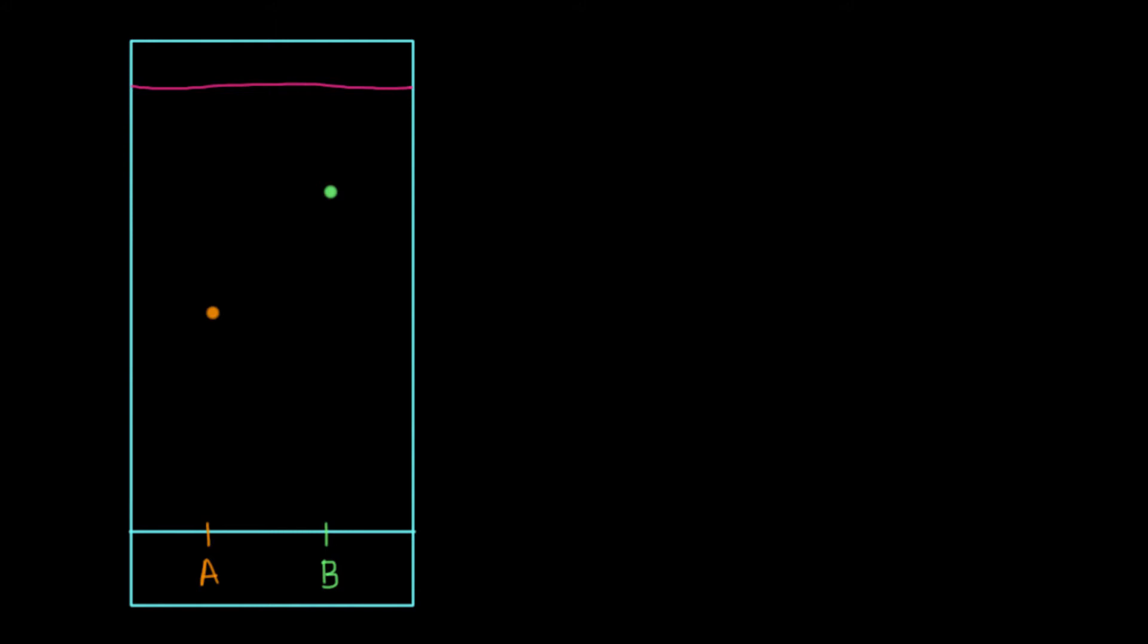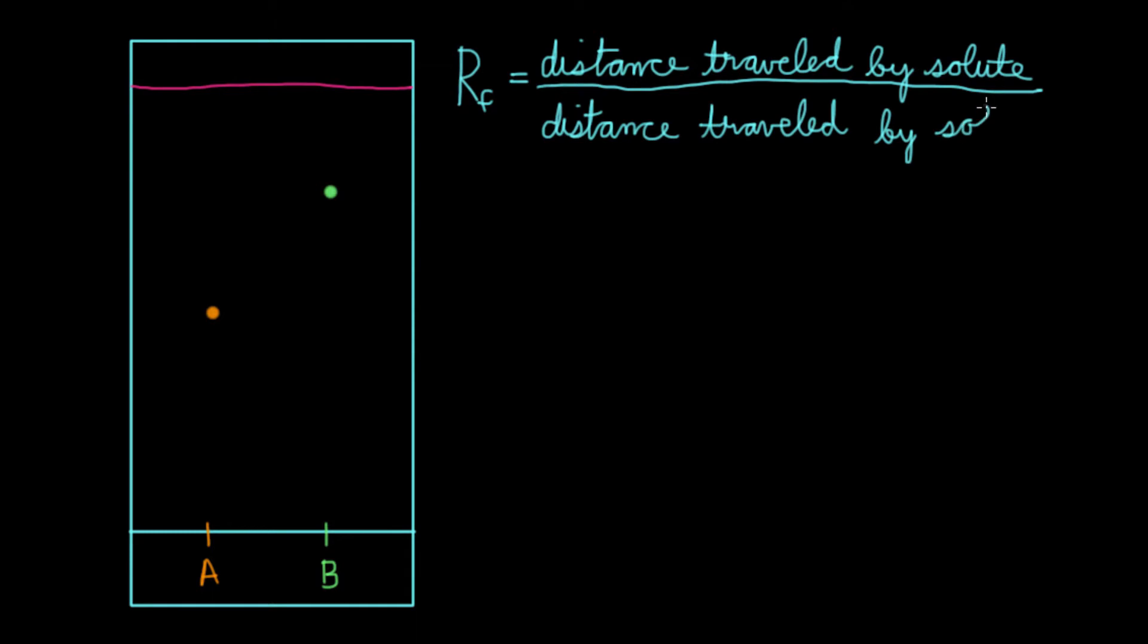How can we even report these values? The way we'd report them if we were writing up a lab report or writing a manuscript, you'd need something known as the retardation factor, also known as the retention factor, or RF for short. RF is equal to the distance traveled by solute over the distance traveled by the solvent.